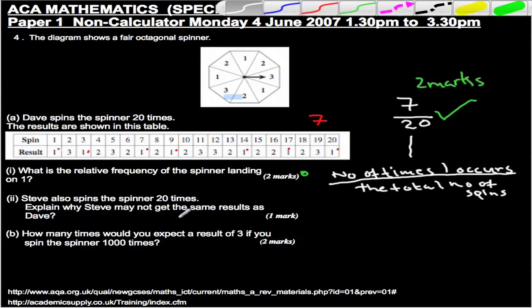Okay, Steve also spins the spinner 20 times. Actually, my name's Steve, so this guy's a nice guy. Anyway, explain why Steve may not get the same results as Dave. Well, let's think. Why isn't he getting exactly the same results?